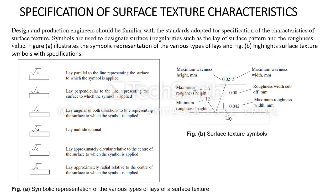Coming to the next slide, we'll have symbols for the surface texture. Every design and production engineer should be familiar with the standards adopted for specification of the characteristics of surface texture. Symbols are used to designate surface irregularities such as the lay of surface pattern and the roughness value. The first figure will show you the lay, which is how the manufacturing process for a particular job has been done. Either it is parallel to the line representing the surface or perpendicular to the line representing the surface, or angular in both directions, or multi-directional.